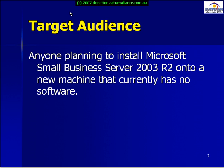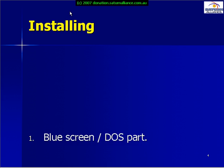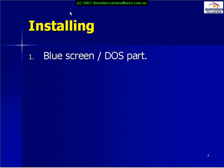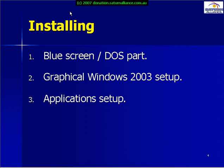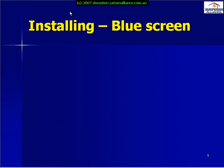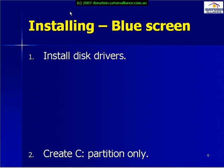The target audience for this presentation is anybody planning to install Microsoft Small Business Server 2003 R2 onto a new machine that currently has no existing software. Our installation is made up of three parts: initially installing the blue screen or DOS component, then the graphical user interface under Windows 2003, and finally installing our applications, which include things like Exchange Server.